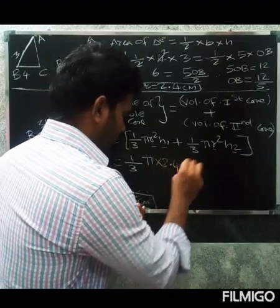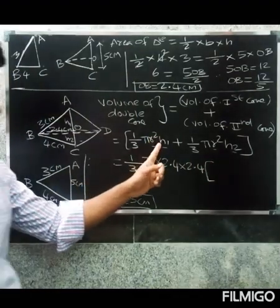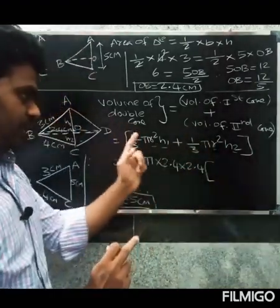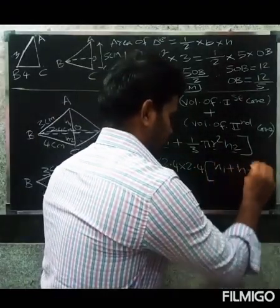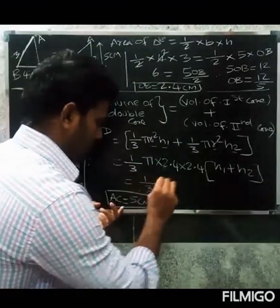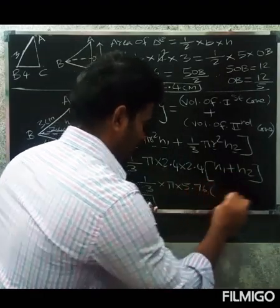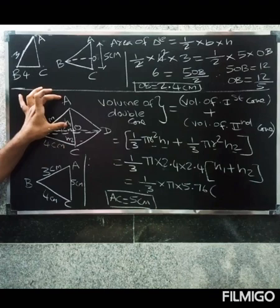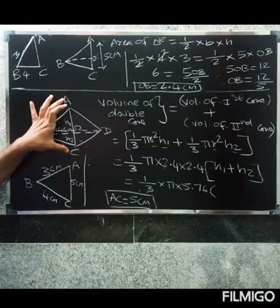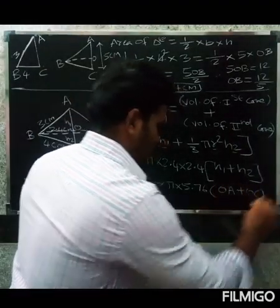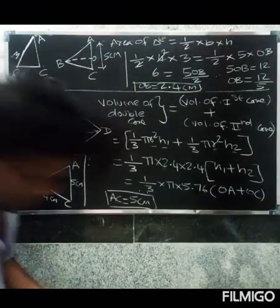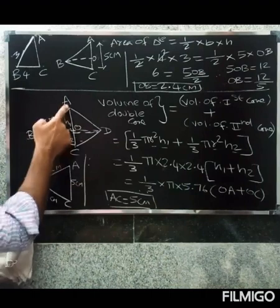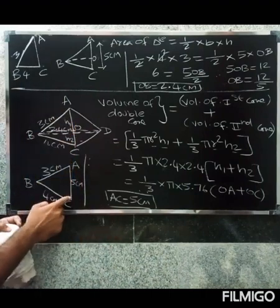So radius is 2.4 centimeters, and h1 plus h2 equals AC equals 5 cm. Volume equals one by three pi r squared into (h1 plus h2). So one by three into pi into 2.4 into 2.4 into 5. That is one by three into pi into 5.76 into 5. H1 plus H2 total is AC, and OA plus OC equals AC equals 5 cm.